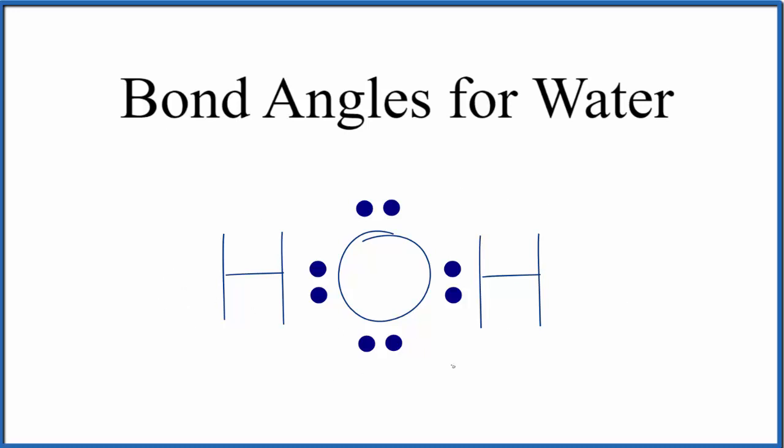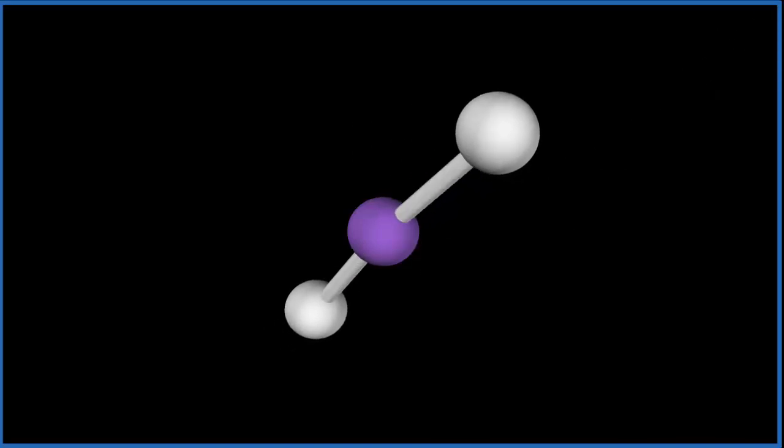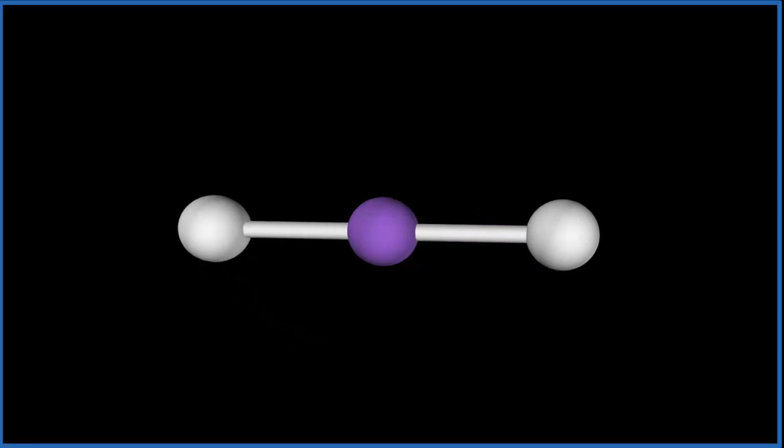Let's take a look at the water molecule in three dimensions. Let's remember that we have one, two lone pairs, and then we have these two hydrogen atoms. So the purple, that'll be the oxygen. We're going to add the two hydrogens, one, two, and you see they spread out to be as far away as they can from each other.